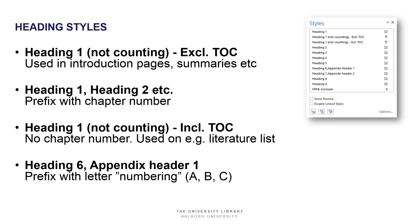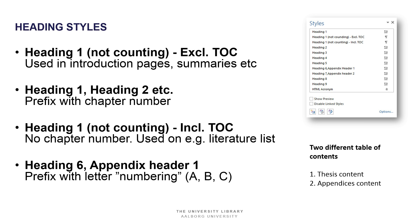This can be used, for instance, for the literature list, which is not a chapter but you would like it included in the table of contents anyway. We have also made a small hack or fix with Word: we have Heading 6 and Heading 7, which are the appendix headers. These are prefixed with letter numbering — A, B, C, and so forth — which allows us to make two different tables of contents: one for the thesis content and one for the appendixes.